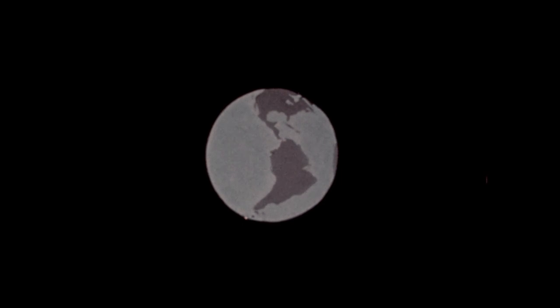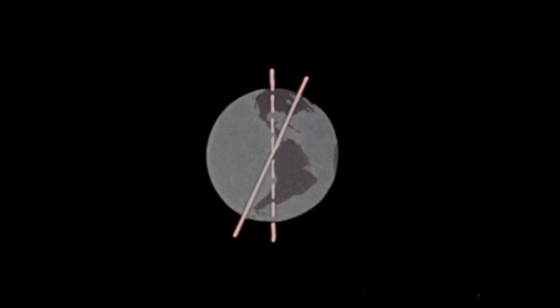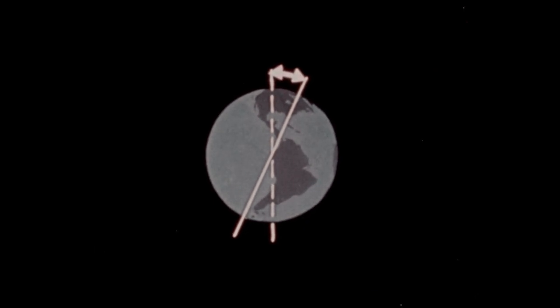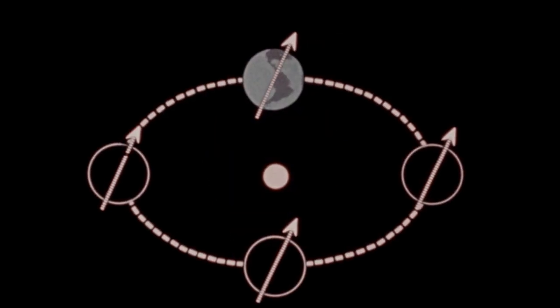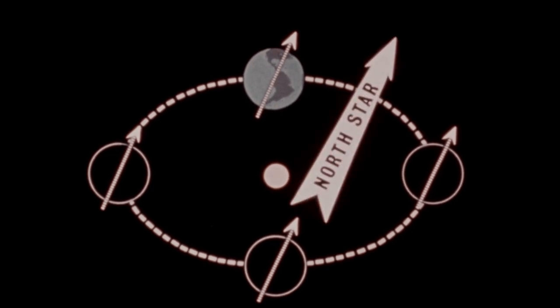To measure the amount of the tilt, imagine a line that is straight up and down, and compare it to the line of the real axis. The difference is an angle of 23 and a half degrees. At every position along this orbit, the north end of the tilted axis points toward the north star.